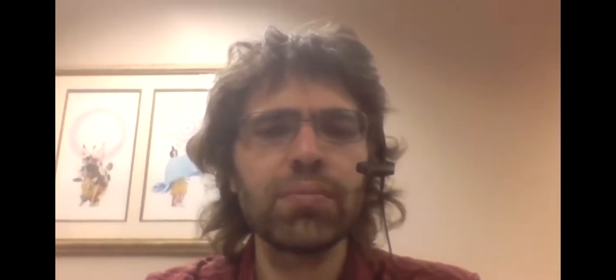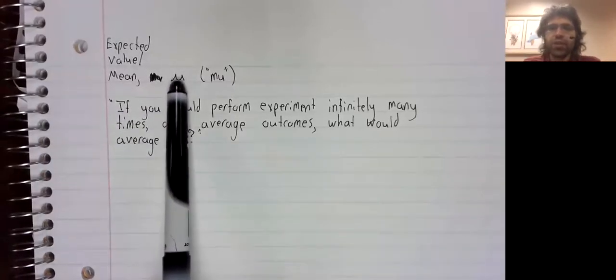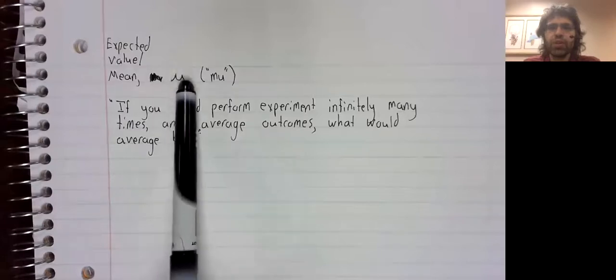That definition generalizes to continuous probability distributions. In both the discrete and continuous case, the expected value, also called the mean, written with the Greek letter mu,